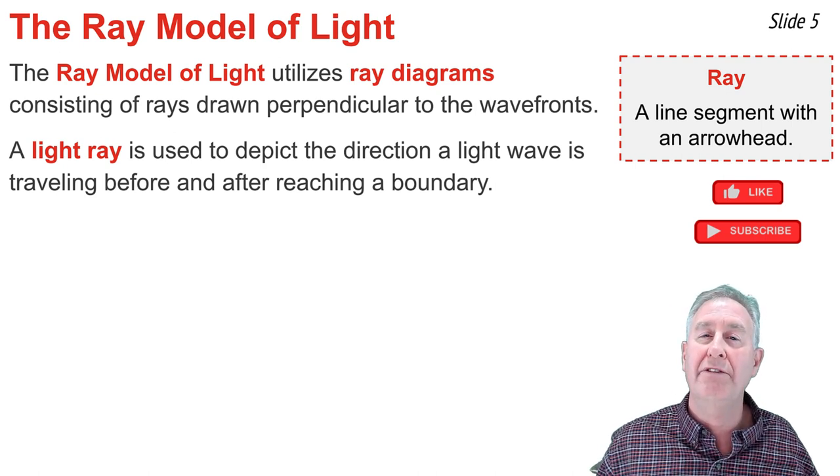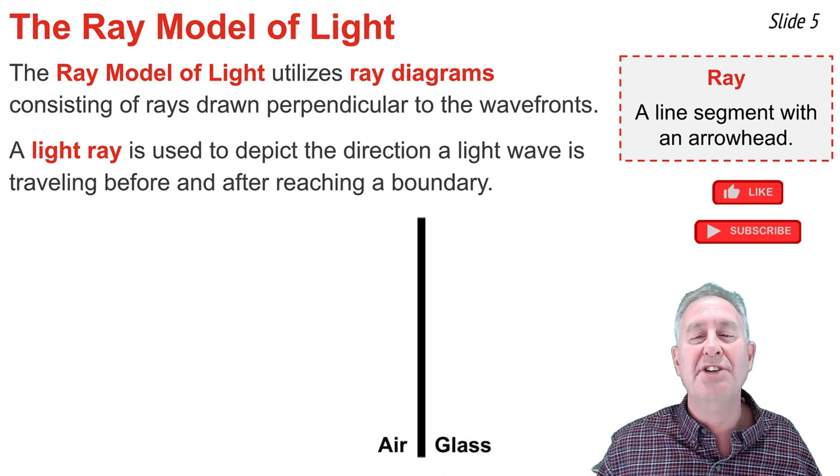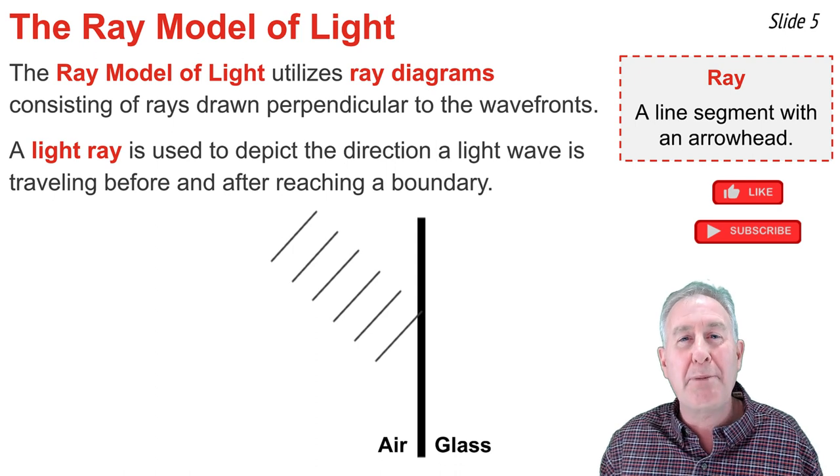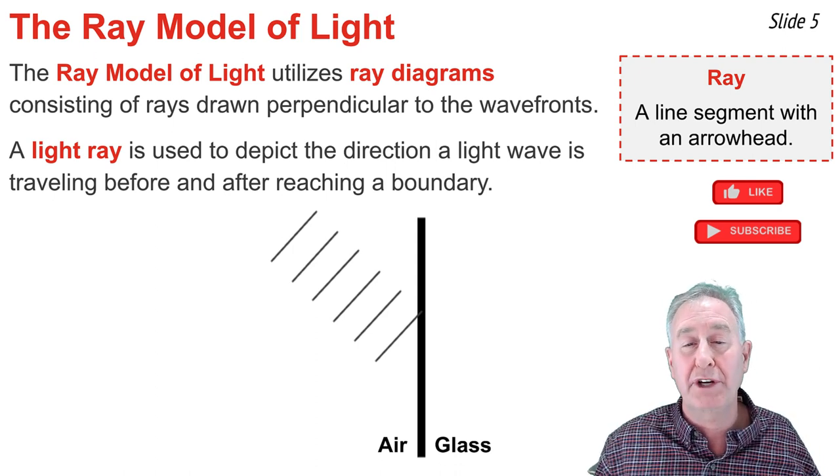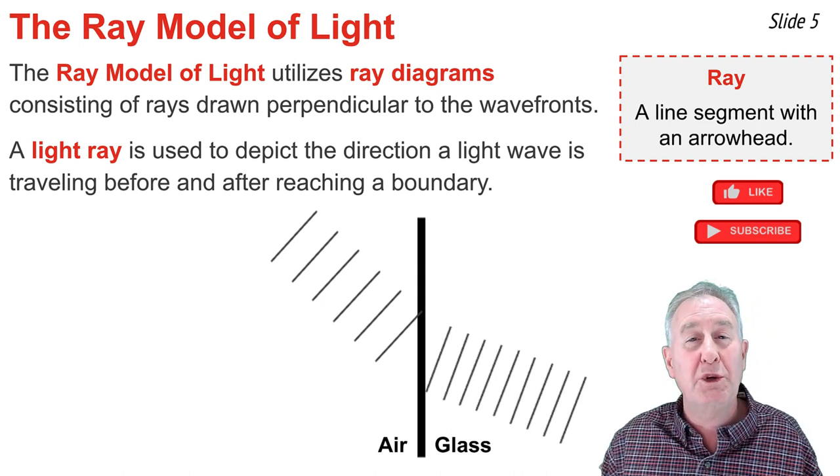As an example, let's consider light waves traveling through air and approaching a boundary with glass. Once those waves transmit across the boundary into the glass, there would be a new wavelength, a new speed, and a new direction. We could represent the direction of these incident waves by an arrow shown here. This would be known as a light ray.